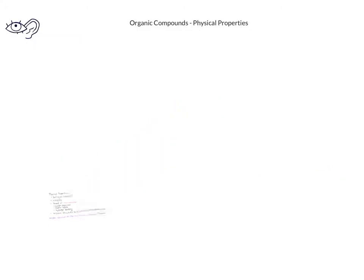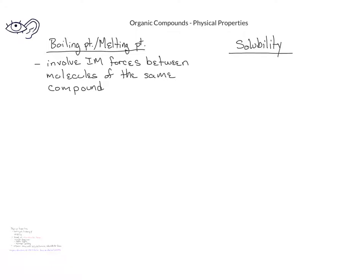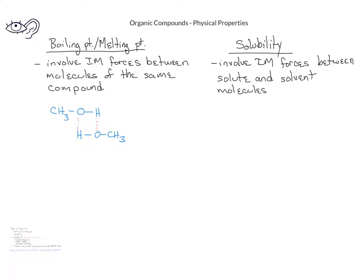Before we get too much further, it would be helpful to make a distinction between boiling point and melting point and solubility. With boiling point and melting point, it's important to remember that we're talking about intermolecular forces between molecules of the same compound. For example, when we're talking about the boiling point of methanol, we're interested in the intermolecular forces that exist between two molecules of methanol. Solubility, on the other hand, involves intermolecular forces between a solute and a solvent molecule. For example, if we're interested in understanding the solubility of methanol in water, we'd have to look at the intermolecular forces that exist between methanol and water molecules.